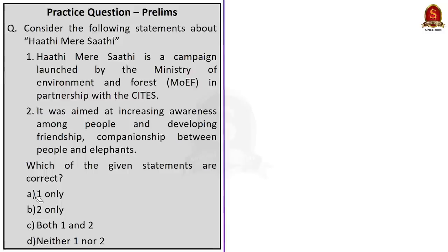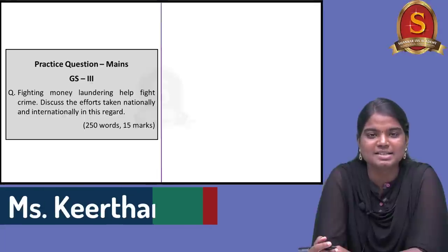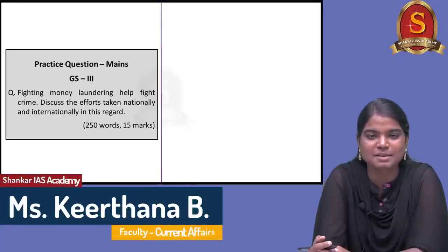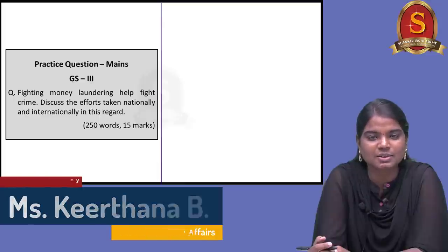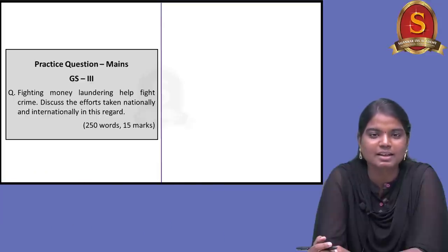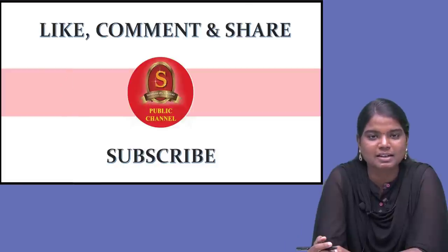Coming to next question, consider the following statements. Free legal services is provided in both civil and criminal matters under the Legal Services Act 1987. This statement is correct. Now coming to second statement, the Chief Justice of High Court is the patron-in-chief of both the State Legal Services Authority and District Legal Services Authority. This statement is incorrect. Chief Justice of High Court is patron-in-chief for only State Legal Services Authority and not the District Legal Services Authority. DLSA is chaired by district judge. So here second statement is incorrect. The question has asked for incorrect statements, so the correct answer here is option B. Now coming to the final question, consider the following statements about Hathi Mere Sathi. Read the statements, think for a minute and try to attempt this question and post your answer in the comment section. I have displayed a main question for your practice. So interested aspirants, write it and post it in the comment section. And if you have any queries related to the articles that we discussed today, post that also in the comment section. And with this, we have come to the end. If you find the video useful, like, share and comment and do subscribe to Shankar IAS Academy's YouTube channel for further updates. Thank you.